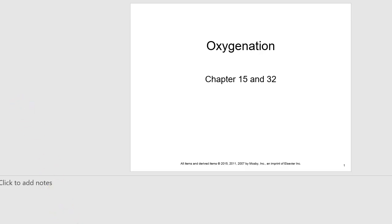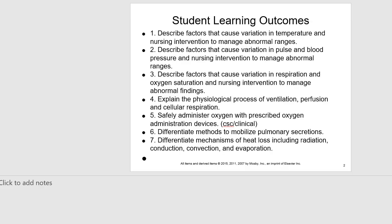Nurses, this is Lisa. I have a podcast on oxygenation, and our presentation today is coming from chapter 15 and chapter 32. Chapter 15 is about vital signs. Our student learning outcomes are to describe factors that cause variation in temperature and nursing interventions to manage abnormal ranges, describe factors that cause variation in pulse and blood pressure and nursing interventions to manage abnormal ranges, describe factors that cause variation in respiration and oxygen saturation and nursing interventions to manage abnormal findings.